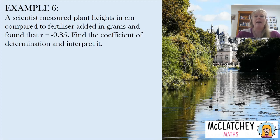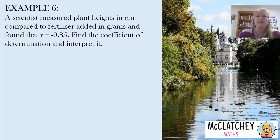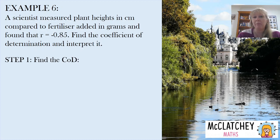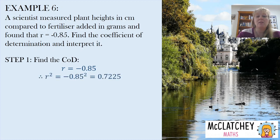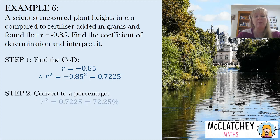Let's talk about this with a different context. A scientist measured plant heights with different amounts of fertiliser added and found the correlation was negative 0.85. We need to find the coefficient of determination and interpret it. If R equals negative 0.85, then R squared equals 0.7225, which as a percentage is 72.25%.